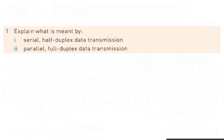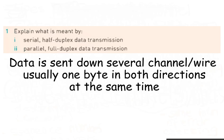Explain what is meant by parallel full-duplex data transmission. The correct answer is: data is sent down several wires, usually one byte, in both directions at the same time.